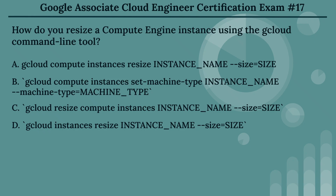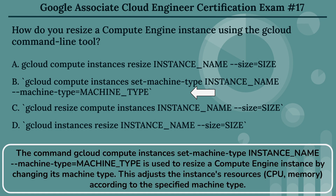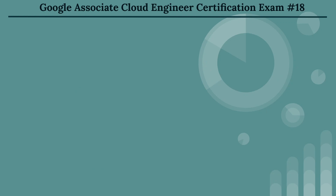The right answer is Option B: gcloud compute instances set-machine-type INSTANCE_NAME --machine-type=MACHINE_TYPE. This command is used to resize a Compute Engine instance by changing its machine type. This adjusts the instance's resources — CPU and memory — according to the specified machine type.